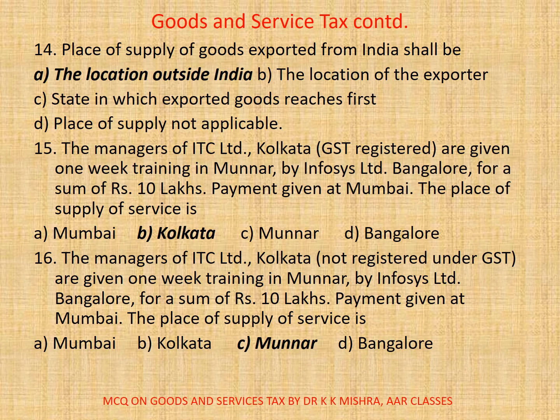Question 14: The place of supply of goods exported from India shall be — A. the location outside India, B. the location of exporter, C. the state in which exported goods reaches first, D. place of supply not applicable. Here correct option is A: the location outside India.